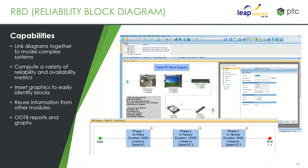In terms of RBD — reliability block diagrams — we're able to generate individual diagrams by using the interface to add components together to determine a process. From that, we can link diagrams to create more complex systems. For example, we can take a computer and break it down into all its system components, which I'll demonstrate a little later on.